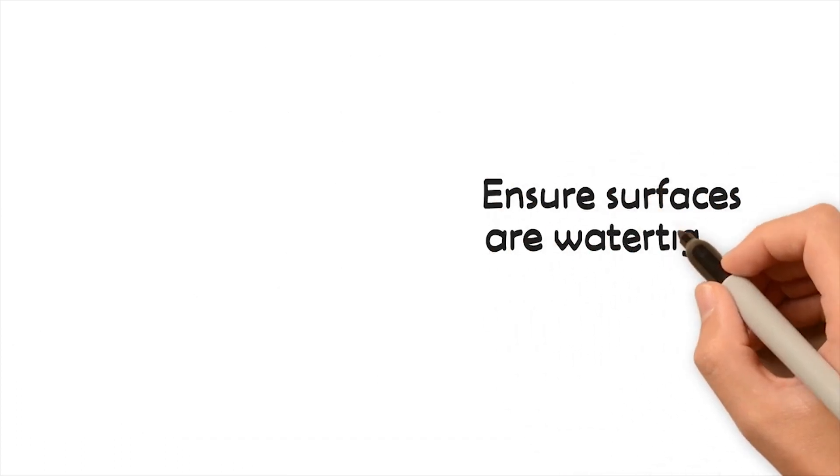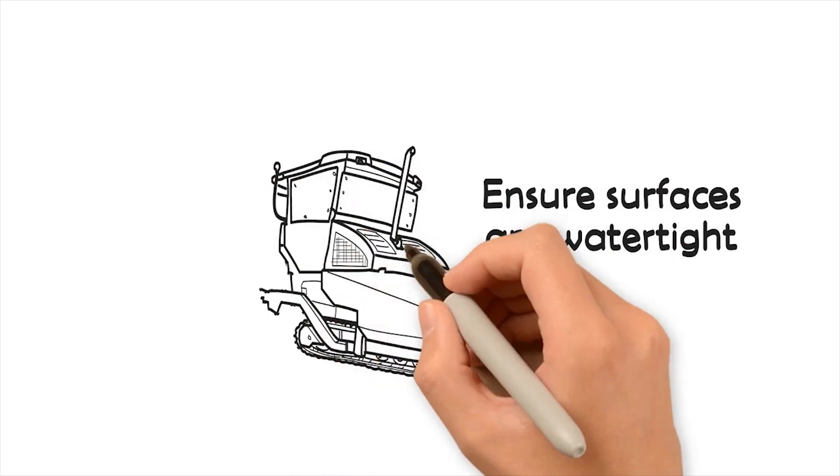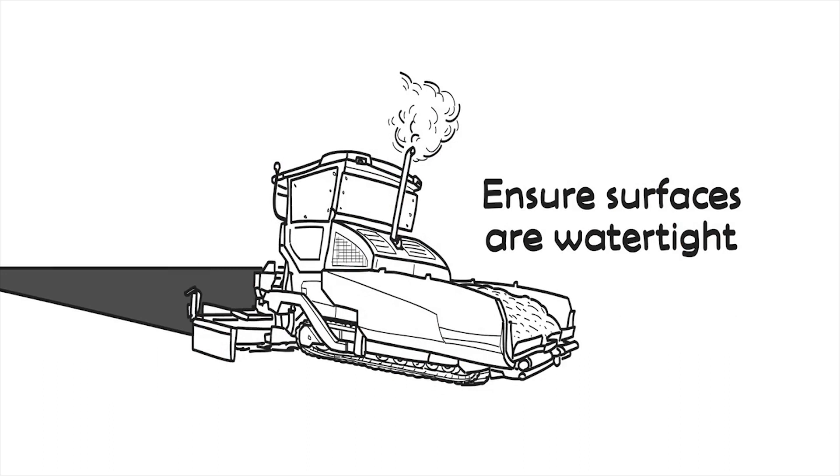Ensure surfaces are watertight. Regular maintenance can prolong the life of the road and ensure it remains watertight by sealing it with a thin layer of asphalt and chippings, often described as surface dressing. Badly designed, however, this can make roads rougher.